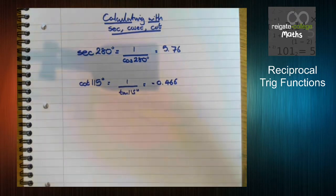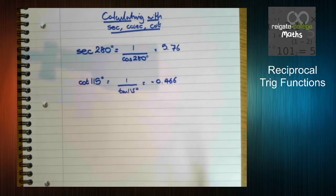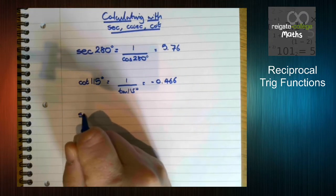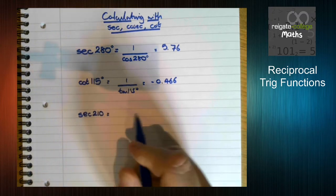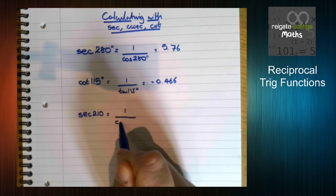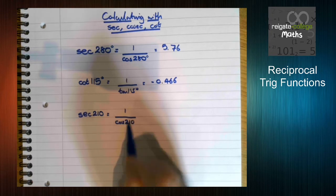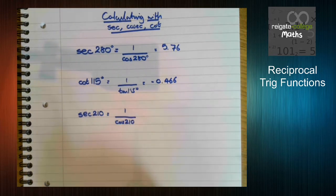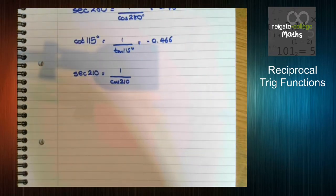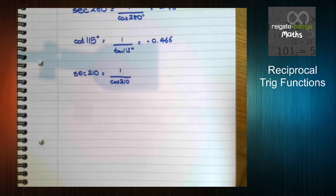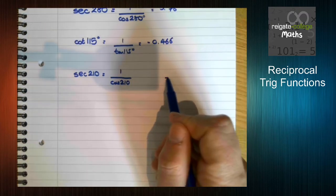Ideas with exact values also work. If we want to calculate the exact value of sec of 210, well, we know that's the same as 1 over cos 210. Now obviously we could put this straight in our calculator, but that's kind of not the point of this example.